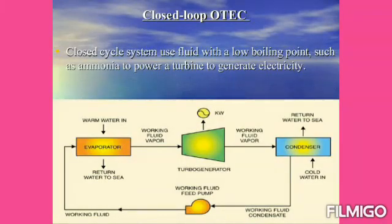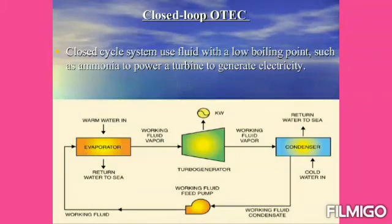Now we will study the closed cycle Ocean Thermal Energy Conversion system, or Anderson cycle. In the diagram, the evaporator is a heat exchanger where warm water from the sea surface is taken. Freon is used as a working fluid. When warm water comes in contact with the Freon, the Freon gets evaporated, and that evaporated Freon gas passes through the turbine where expansion of the Freon vapor takes place. After expansion, mechanical energy is generated and converted into electrical energy by the generator.